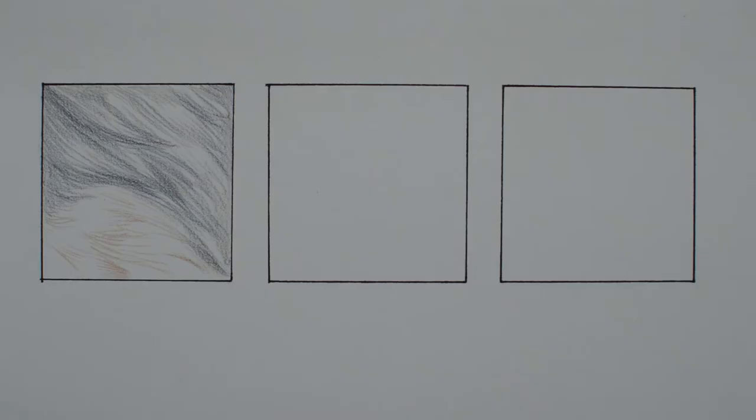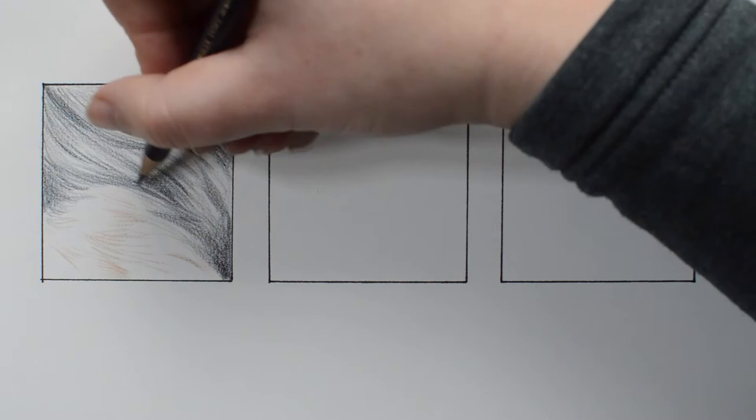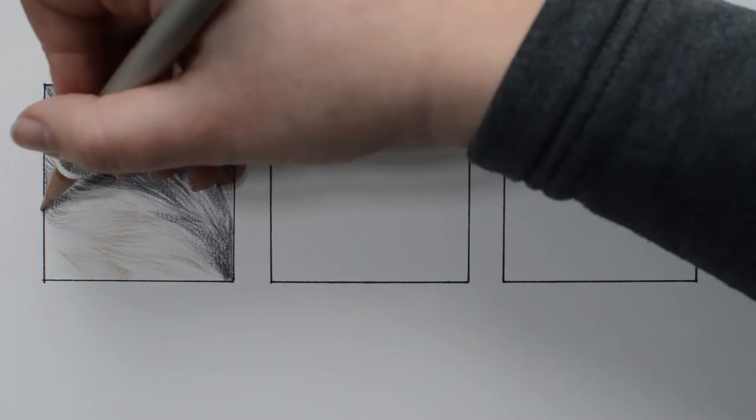When you have longer fur you can see that the fur comes together in different parts and it's easier to tell the different layers from each other. Therefore it's also important to sketch it out to begin with so you don't get lost.